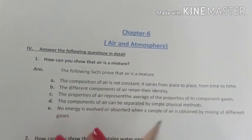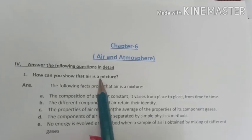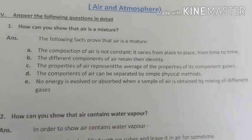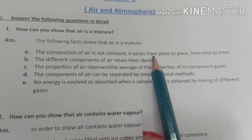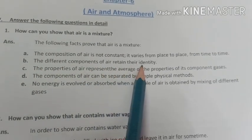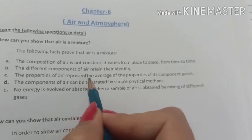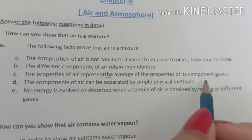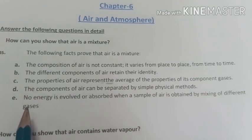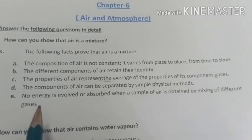Next, we have the fourth part of this exercise: answer the following questions in detail. First long answer question: how can you show that air is a mixture? Answer: the following facts prove that air is a mixture. First, the composition of air is not constant — it varies from place to place and from time to time. Second, the different components of air retain their identity. Third, the properties of air represent the average of the properties of its component gases. Fourth, the components of air can be separated by simple physical methods. Fifth, no energy is evolved or absorbed when a sample of air is obtained by mixing of different gases.